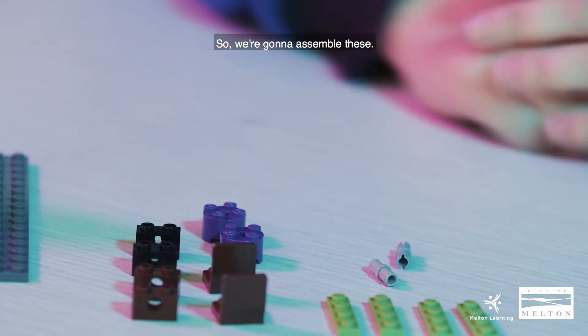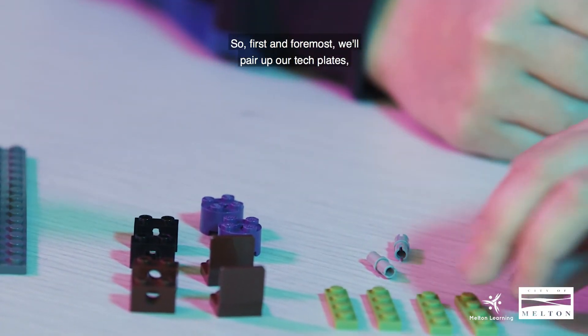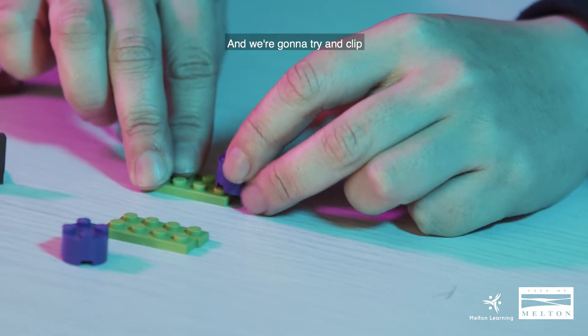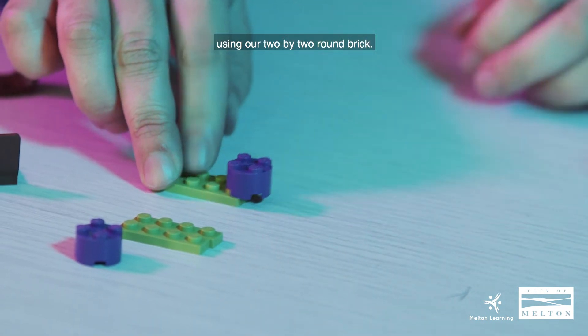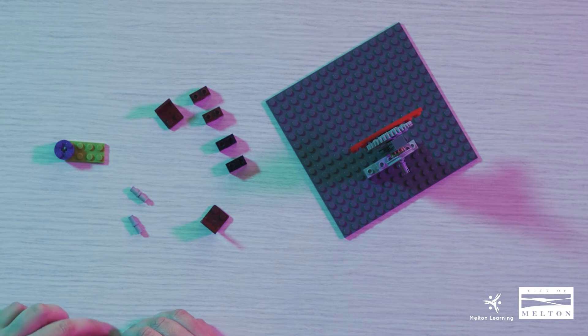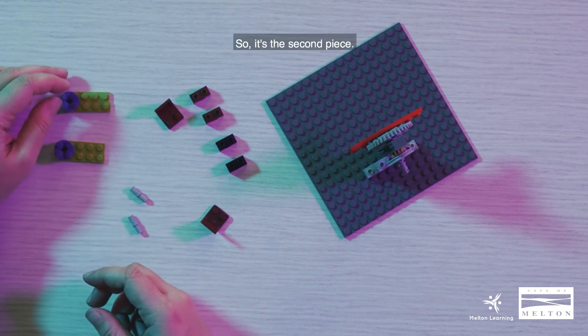So we're going to assemble these. First and foremost, we'll pair up our tech plates like so. And we're going to try and clip using our two by two round brick. And we'll do the same on the other plate. So it's the second piece.